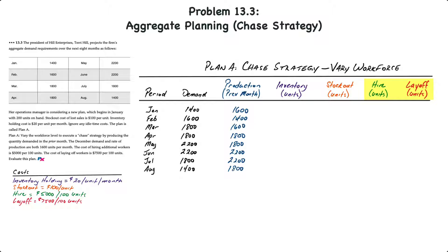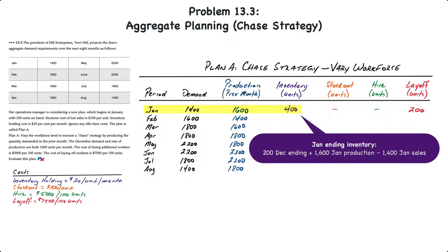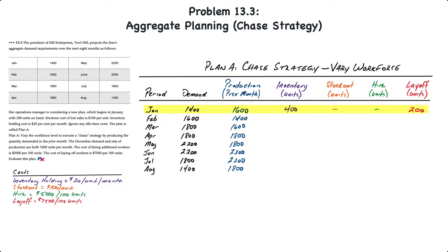Starting with January: demand is 1,400 units and production is 1,600 units, based on the previous month's demand. That gives us an ending inventory of 400 units. Ending inventory is calculated as the 200 units in beginning inventory (as identified in the problem), plus 1,600 units produced, minus 1,400 units of demand — that's 400 units. Because we have ending inventory, there is no stockout.